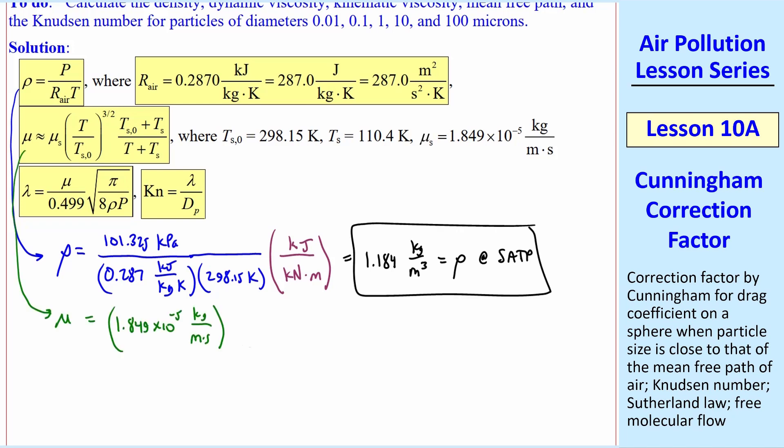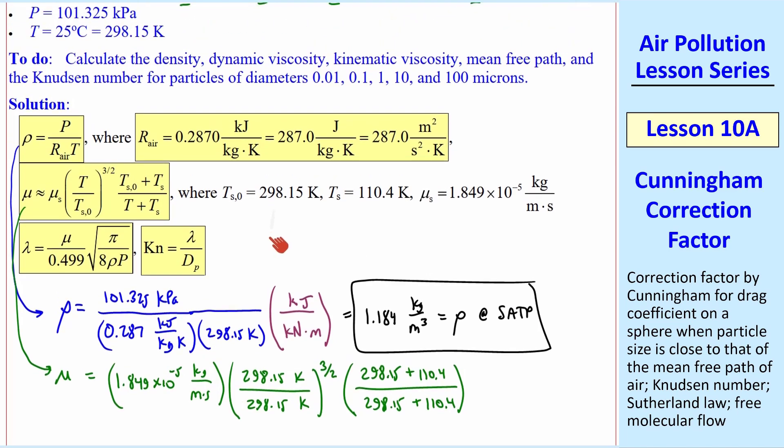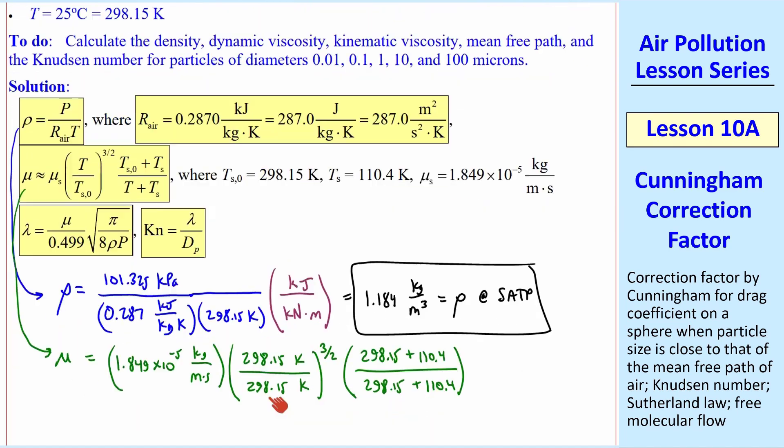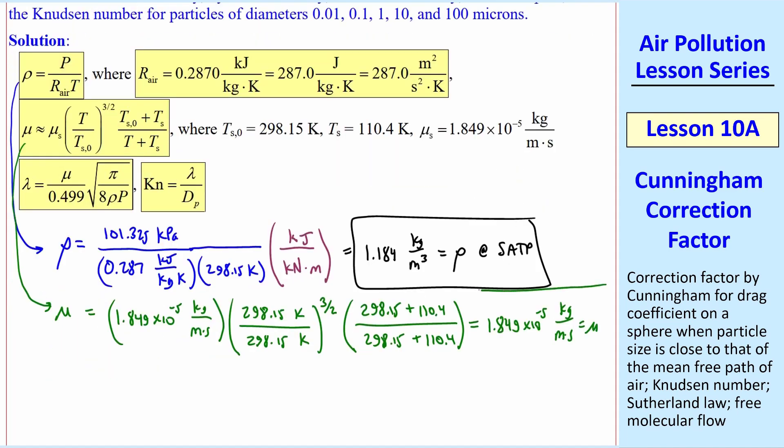For mu, we use the Sutherland equation, mu s, times the ratio of temperatures to the 3 half power. And then this grouping of terms, you can see that the reference temperature is the same as SATP, and thus these two terms are 1, and thus mu is 1.849 times 10 to the minus 5 kg per meter second.